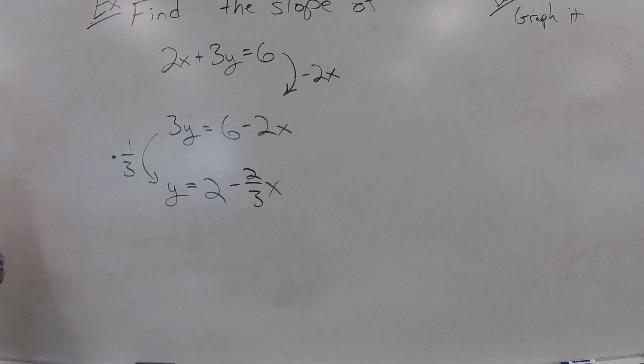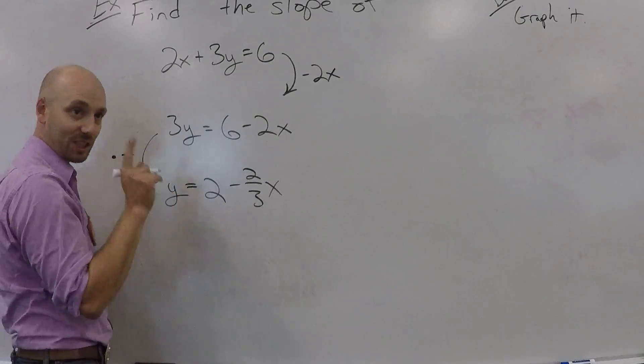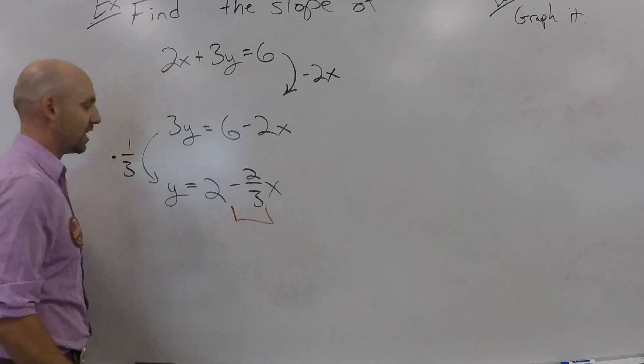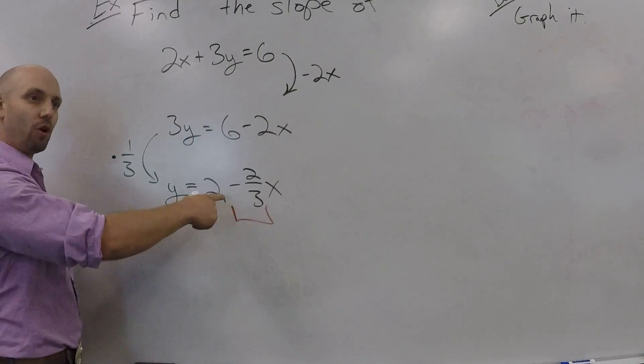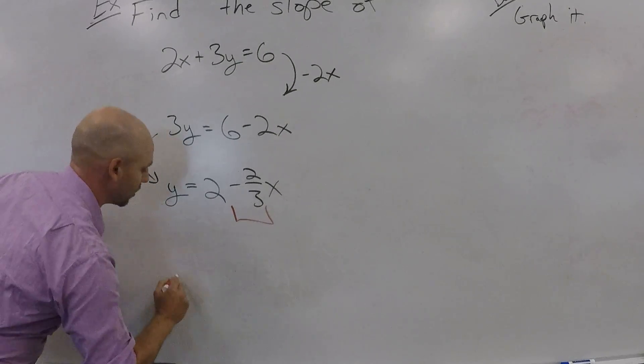And then where's your slope? Minus 2 thirds. Yeah, it's the part on the x, right? It's not just the thing that comes first. It's the part on the x. Is it the whole 2 thirds or the minus 2 thirds? Minus 2 thirds. Good. It's the whole thing minus 2 thirds.